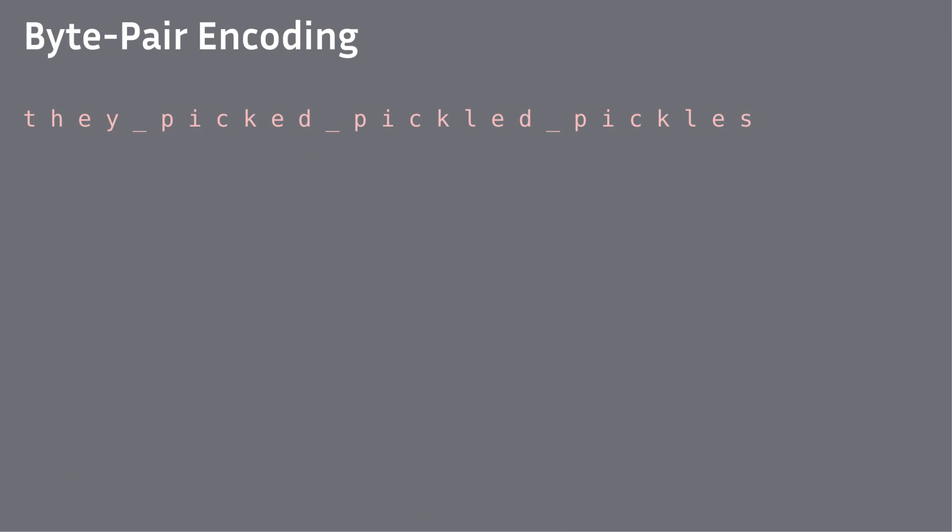How does it work? We start with each character being an individual unit. Then we look at the most common tuple. In this case, it's 'p' and 'i', so we turn those into a single unit: 'pi'.